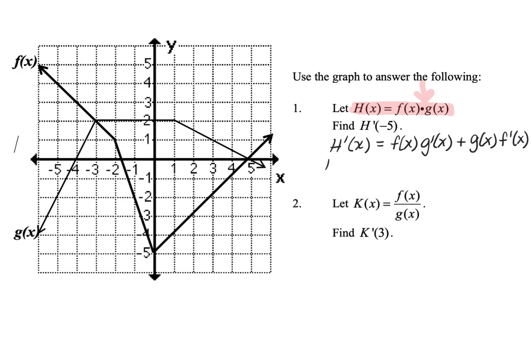Now we want to evaluate this derivative at negative 5. Substituting in x equals negative 5, we need to find f of negative 5 multiplied by g prime of negative 5, and add that to g of negative 5 multiplied by f prime of negative 5. To evaluate all of these pieces, we're going to utilize the graph.